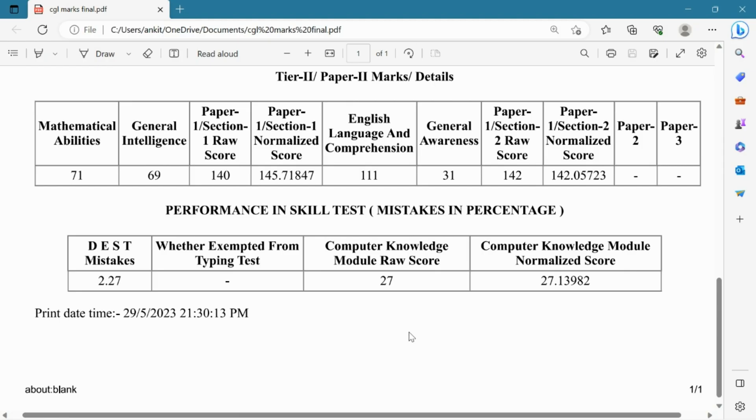I'm from general category and my exam date was 7th March 2023. It was the easiest shift for paper one and toughest shift for the computer. As we all know, paper one is divided in two sections which is maths and reasoning, and section 2 consists of English and GS, and there is different normalization.